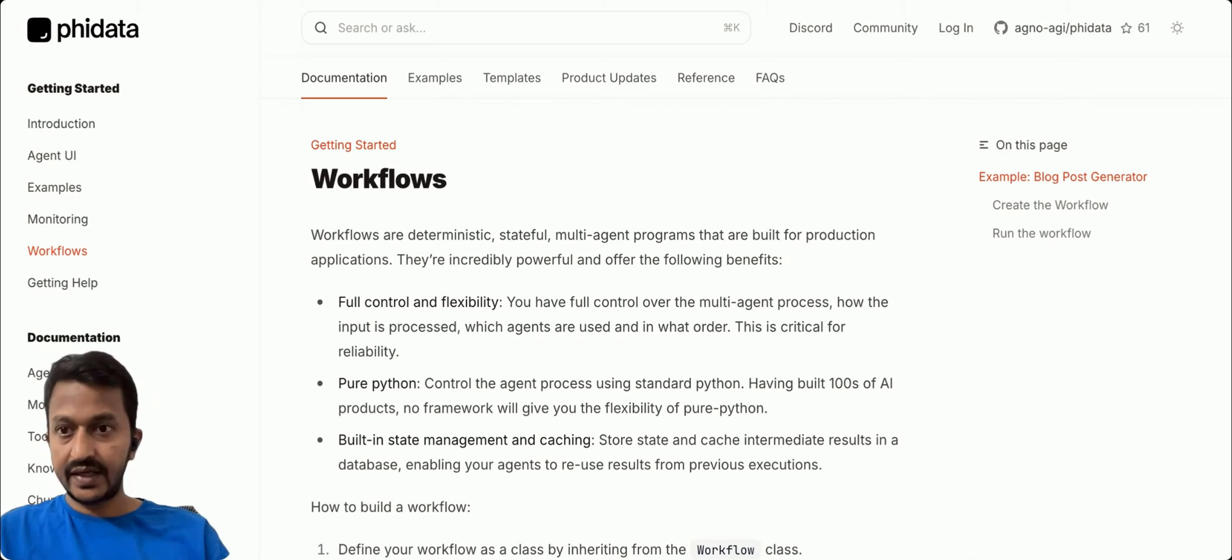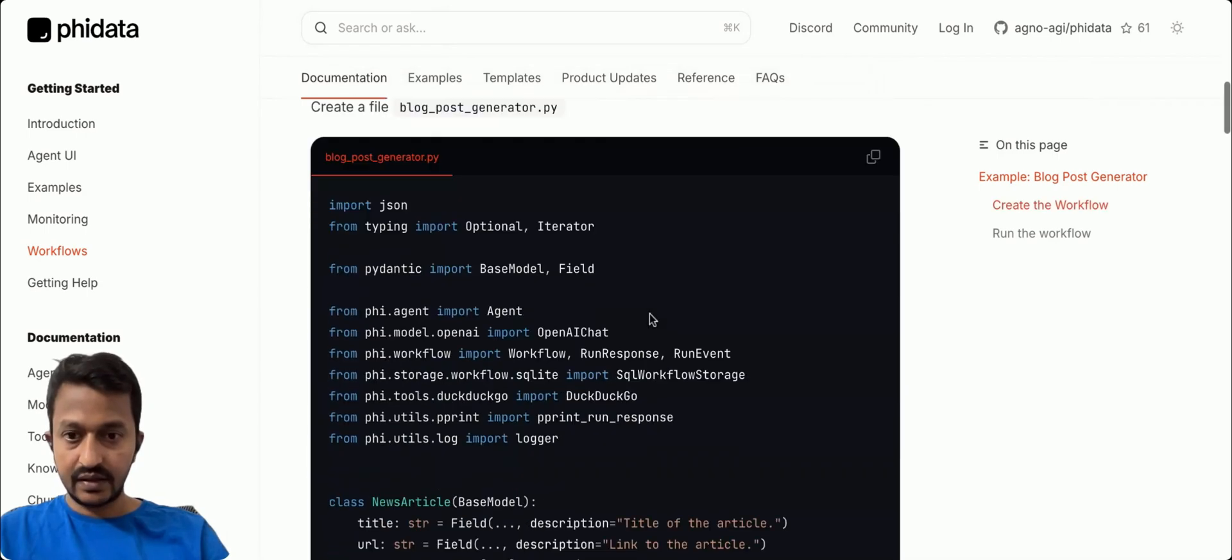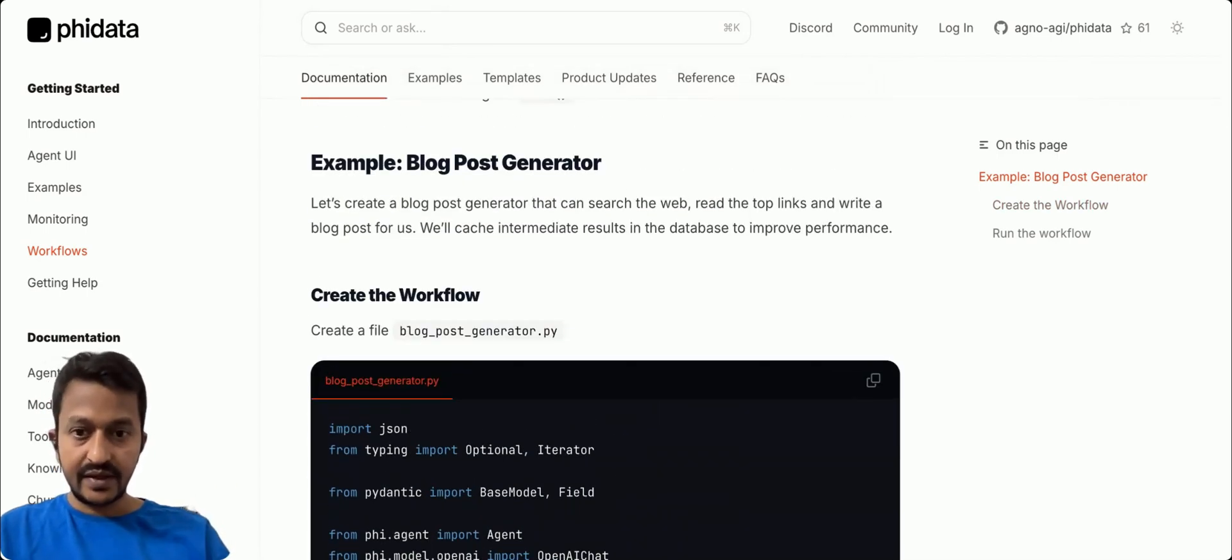Let's go to the FIDATA docs page website and then after that, let's go to the workflows, agentic workflows and here let's create a blog post generator that can search the web, read the top links and write a blog post for us. So let's do this.